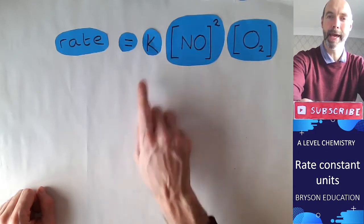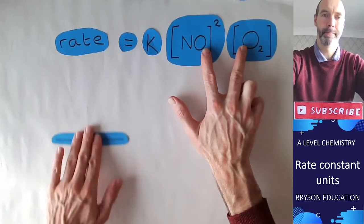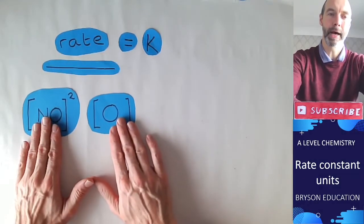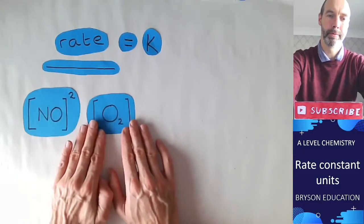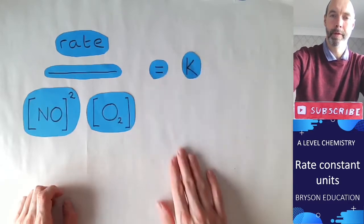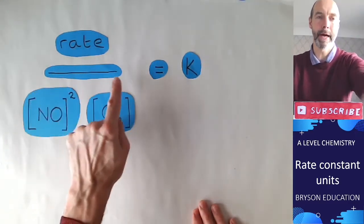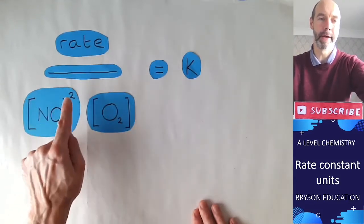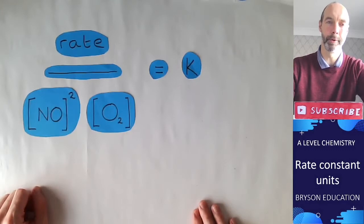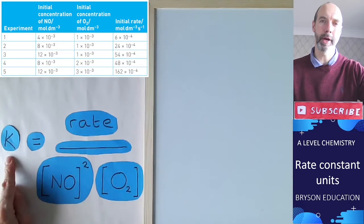We need to take these two and drop them down this side, so we're dividing both sides by NO squared and O2 concentration. There we have k equals rate divided by concentration of NO squared multiplied by the concentration of O2.